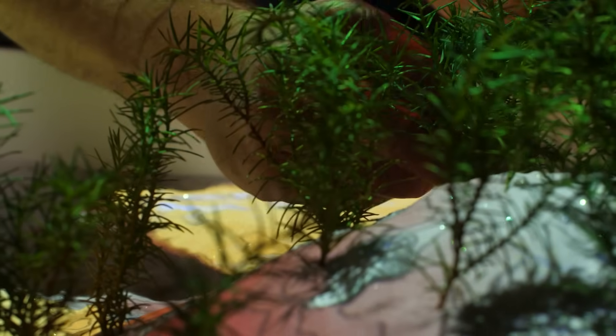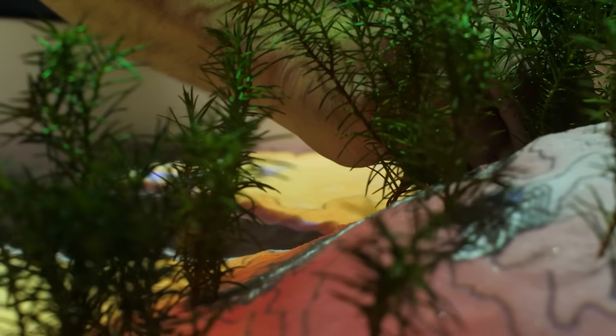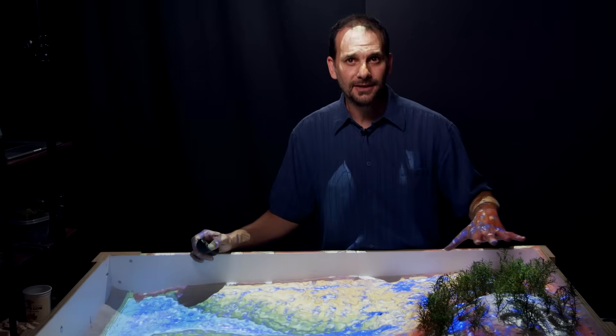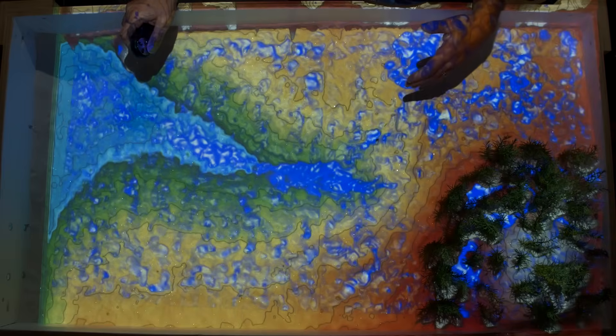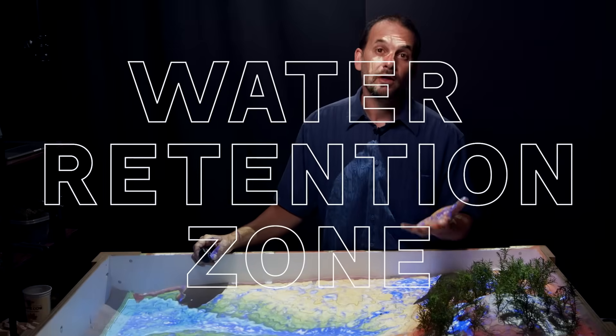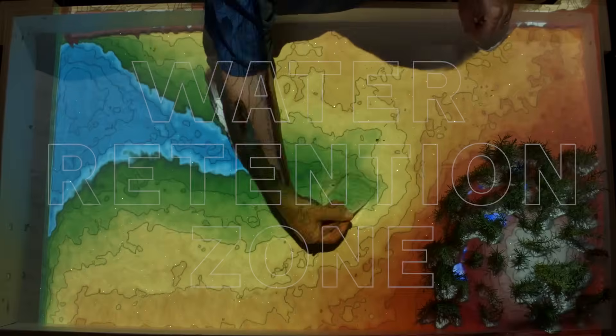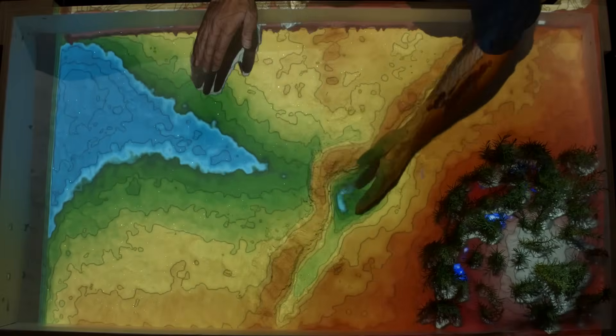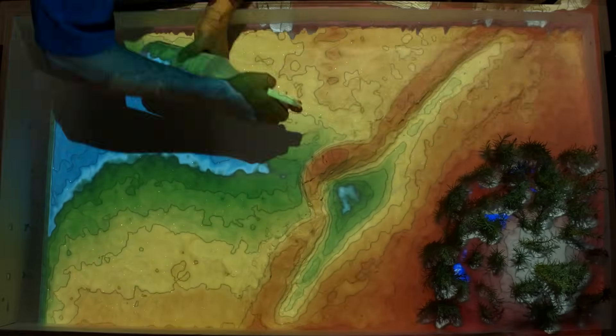Now trees also intercept fog and bring water from the atmosphere dripping down into hilltop soils. Now at the point where the slope breaks from steeper to more gentle begins what we call the water retention zone.